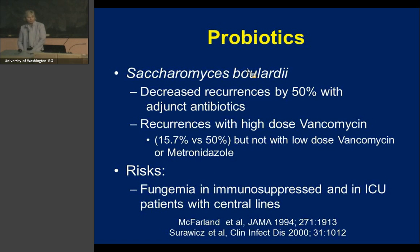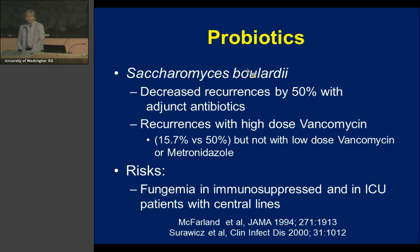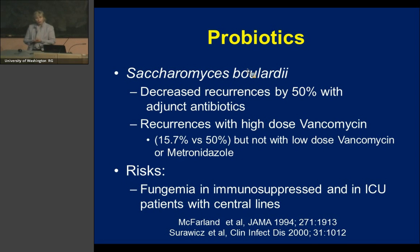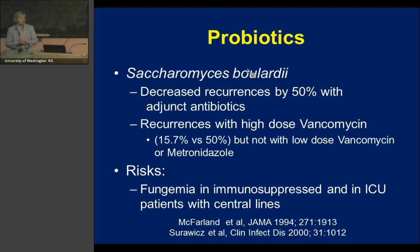Saccharomyces boulardii was studied for about 14 years: in the first trial it decreased recurrences by about 50%, but in the second trial it only worked in a subgroup receiving high-dose vancomycin — and you should always be suspicious of papers requiring subgroup analysis to find efficacy. Importantly, probiotics are not completely benign: fungemia can occur in immunosuppressed patients and patients with central lines, as S. boulardii has been found in the bloodstream of ICU patients.